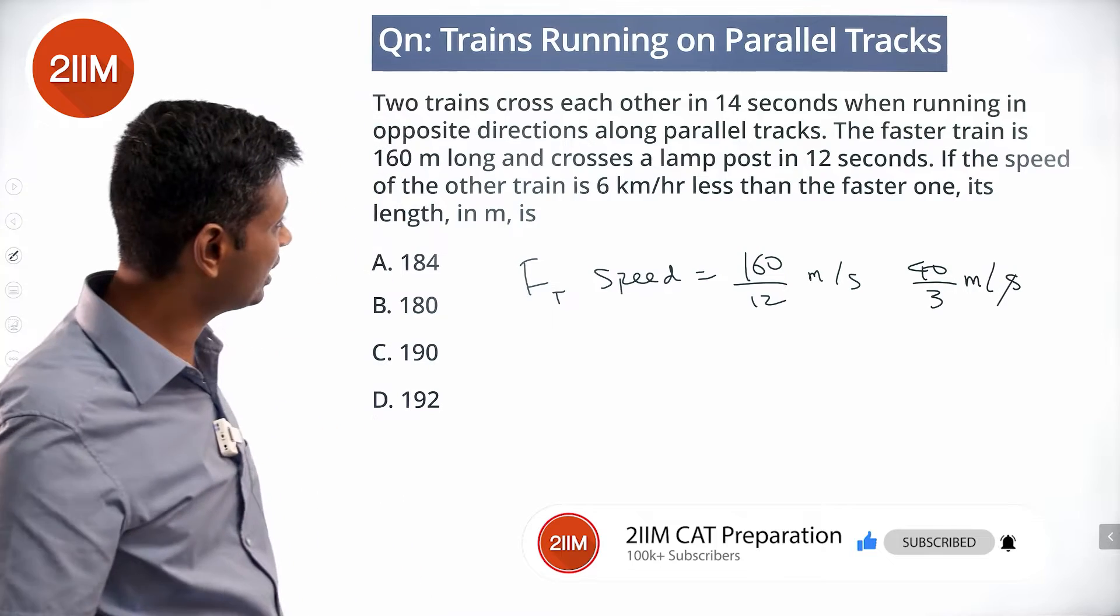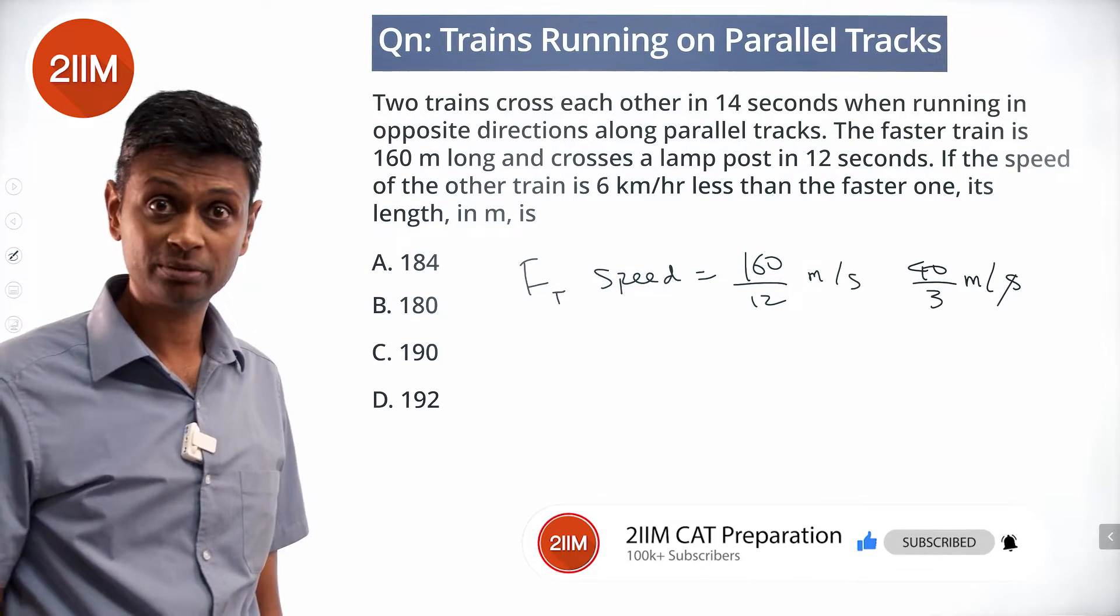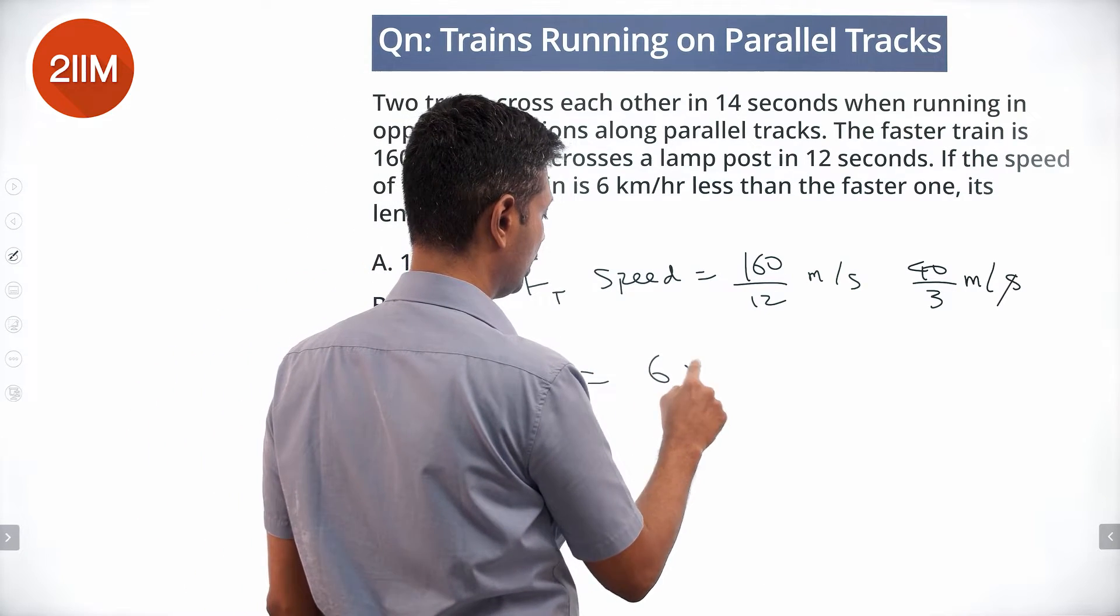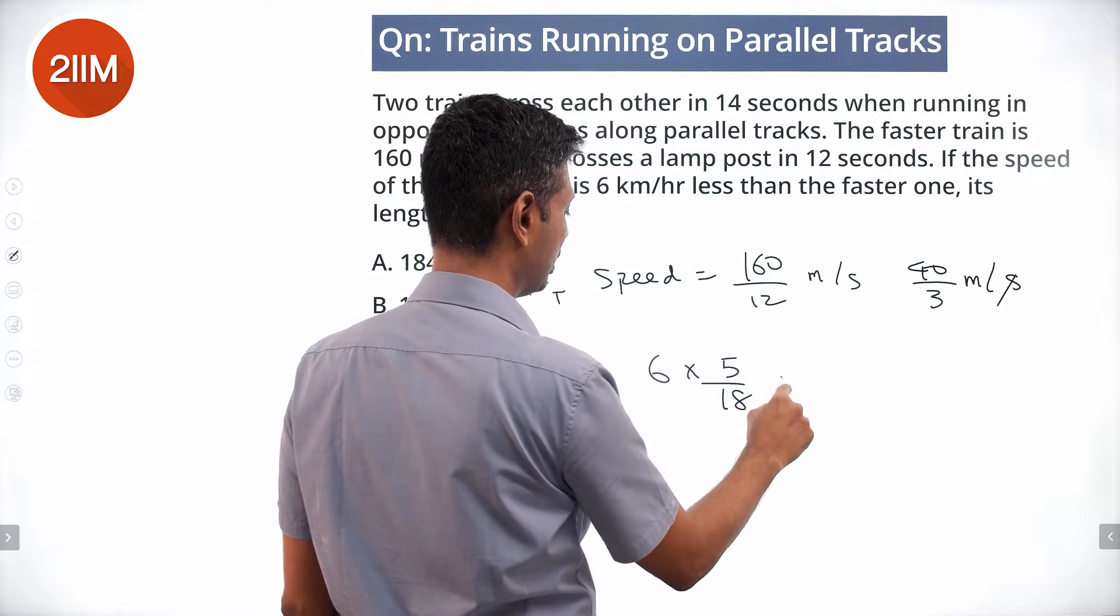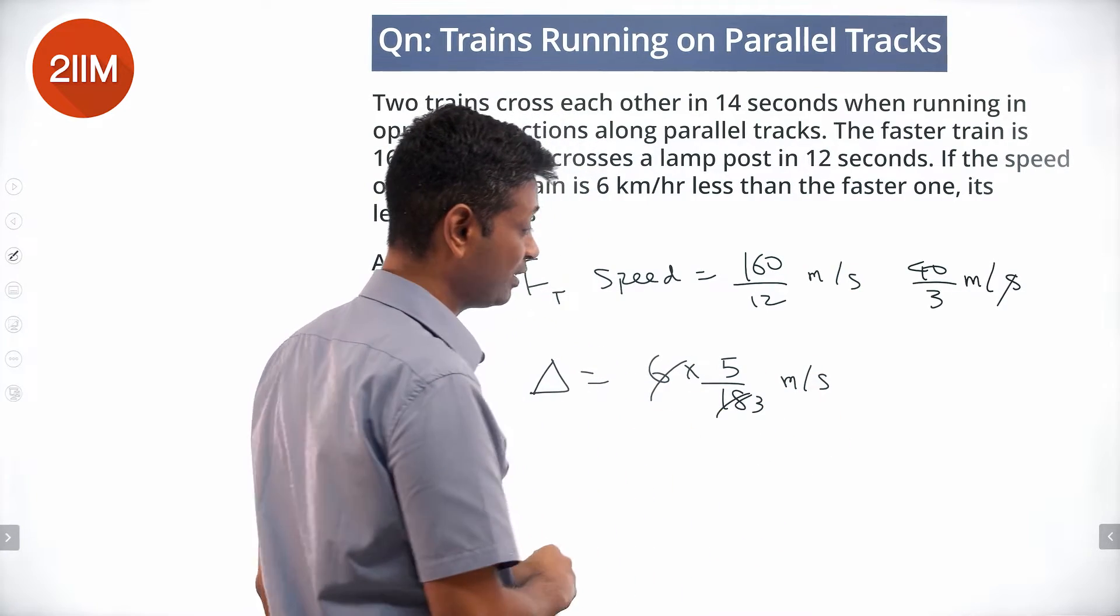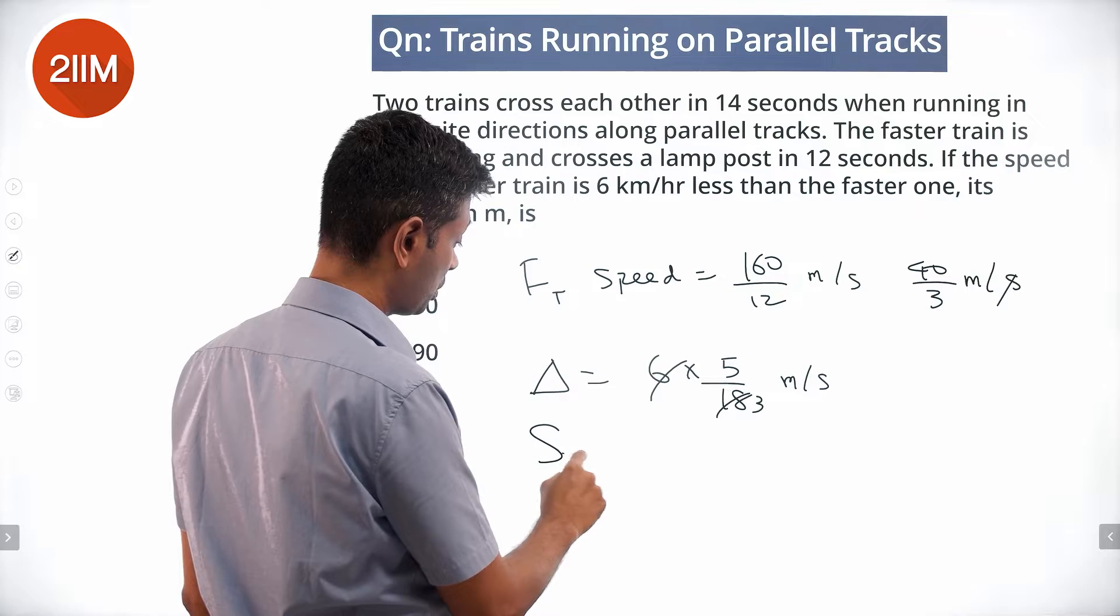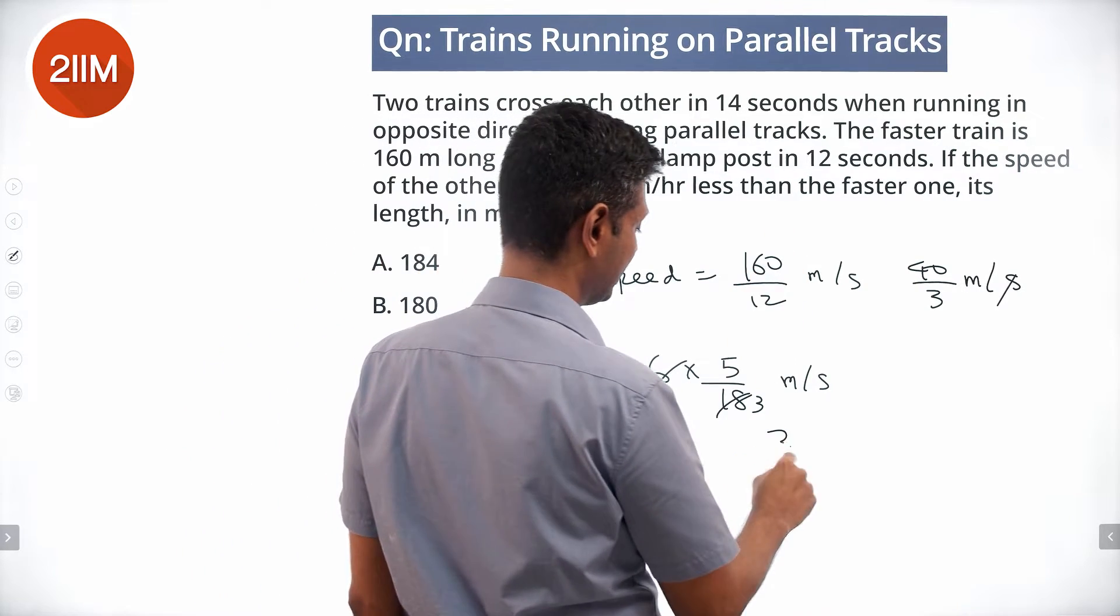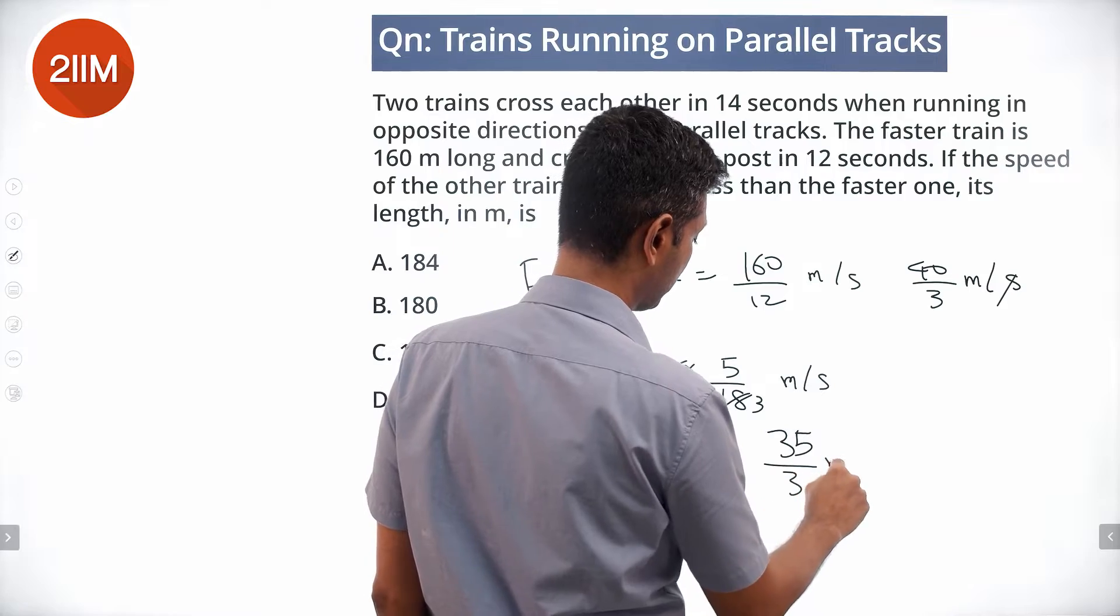The speed of the other train is 6 kilometers per hour less than the faster one. The difference in speed is 6 into 5 by 18 meters per second, or 5 by 3 meters per second. So the slower train speed is 5 by 3 less than this, which is 35 by 3 meters per second.